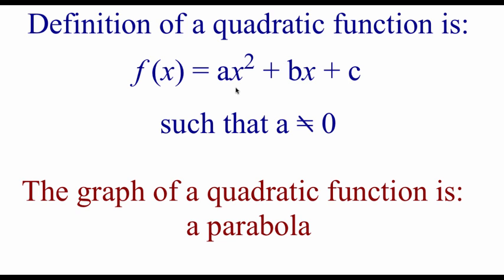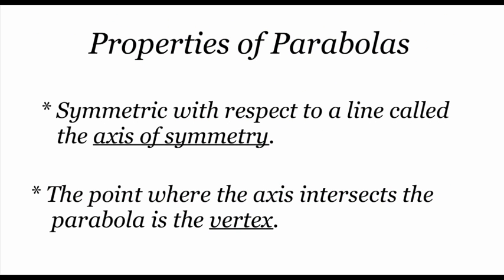A parabola is that kind of u-shape or bowl-shaped graph. A couple of properties: there's a line that runs down the middle of a parabola which we call the axis of symmetry, so our parabolas are symmetric with respect to this line — the left half looks exactly like the right half. There's also a point on the parabola which is either going to be the highest or lowest point on the graph, and we call that point the vertex of the parabola.